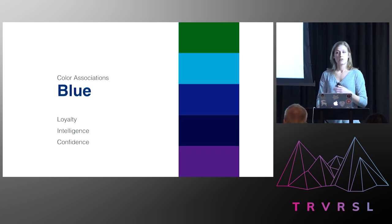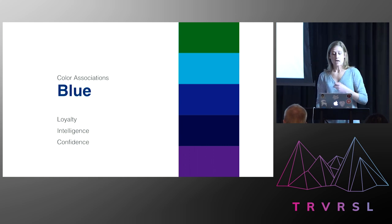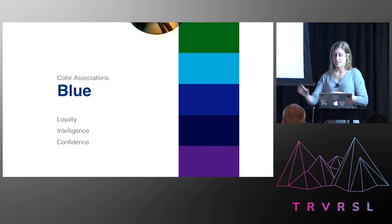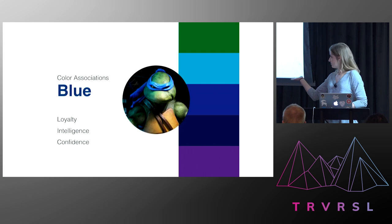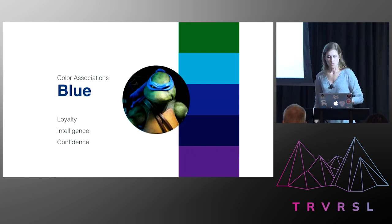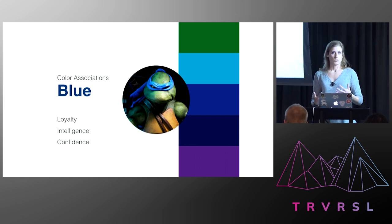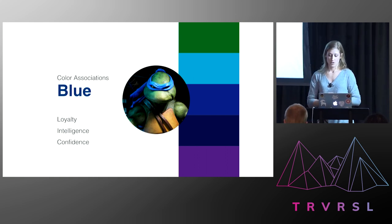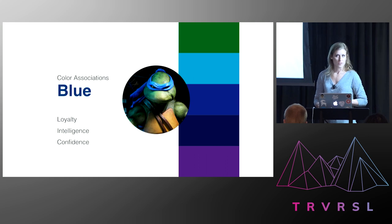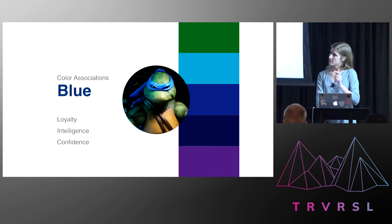Then we have blue. Blue colors are associated with stability and composure. We have Leonardo, who is the leader of the group — he's the ring leader, makes the plans and follows through. If he says he's going to do something, it's going to get done. He makes sure that everybody stays on track and is doing what they need to do.